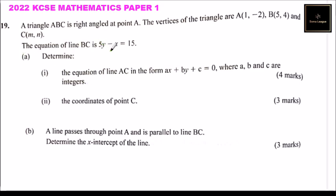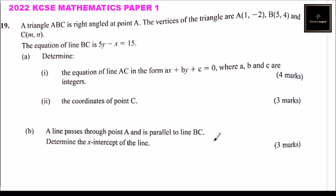We are told that triangle ABC is right-angled at A. The vertices of the triangle are A(1, -2), B(5, 4), and C(M, N). The equation of line BC is 5Y minus X equals 15. Determine the equation of line AC in the form AX plus BY plus C equals 0, where A, B, and C are integers — that's 4 marks. Roman numeral 2: the coordinates of C, for 3 marks. Part B: a line passes through point A and is parallel to line BC; find the X-intercept of the line.